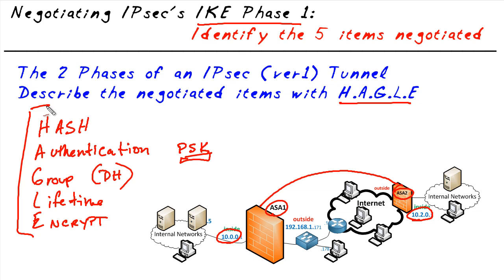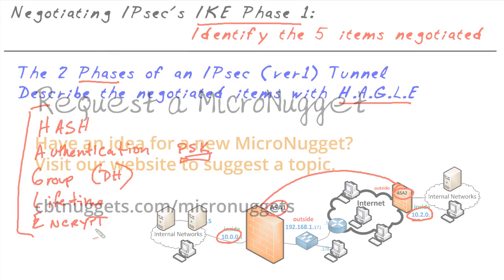With IKE version 1 there's also a Phase 2, and that's a second story. But the five specific things — hashing, authentication, group, lifetime, and encryption method — are what the two peers need to agree to during IKE Phase 1 if they're going to be IPsec peers. I hope this has been informative for you, and I'd like to thank you for viewing.